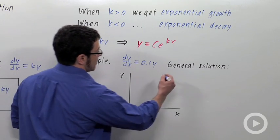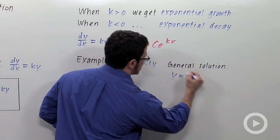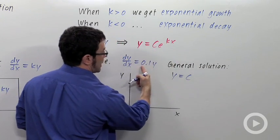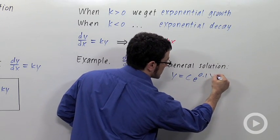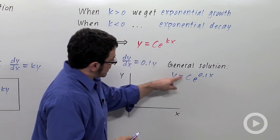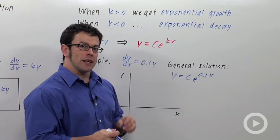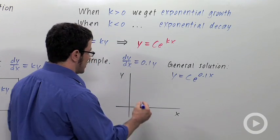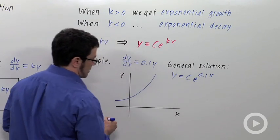the general solution is going to be y equals c e to the k, and k is 0.1x. So the whole family of functions, y equals c e to the 0.1x will be solutions to this differential equation. And those are exponential growth functions.